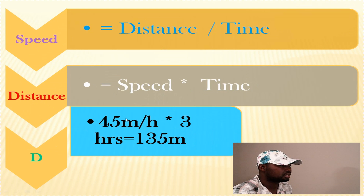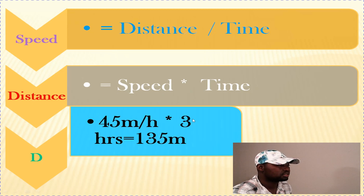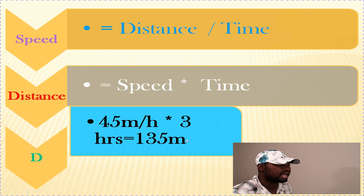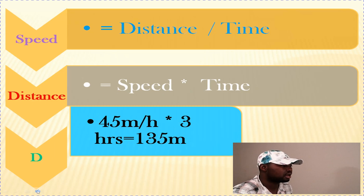We know the speed is 45 miles per hour and she has been driving for 3 hours. So distance equals 3 times 45 miles per hour, which is 135 miles. That means she has covered a distance of 135 miles.